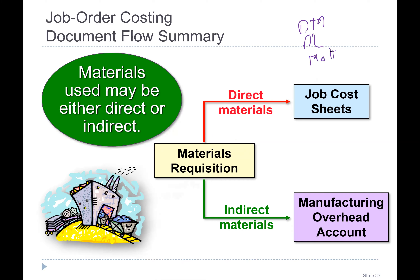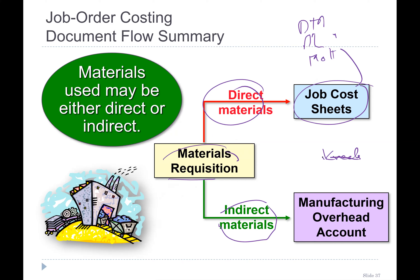For material, there is a material requisition form, and that includes direct material. Direct material goes directly to the job cost sheet, which includes those three components we saw in the earlier slide. Material in the form of indirect material — like wooden crates, nails, lubricants — is also recorded in the requisition form.